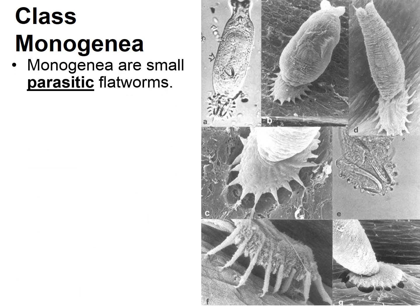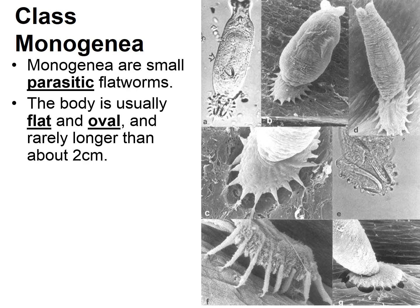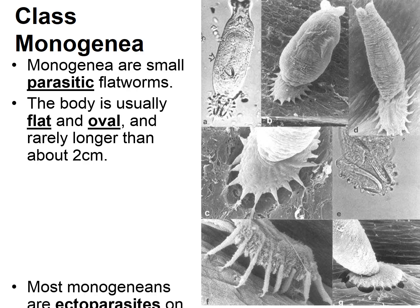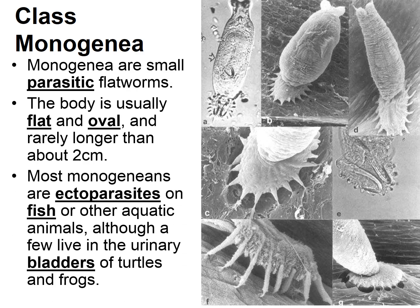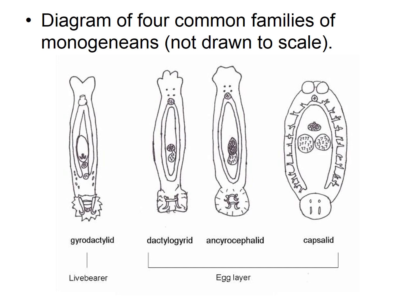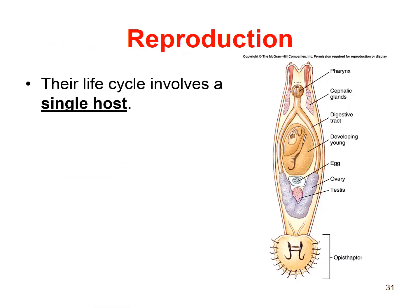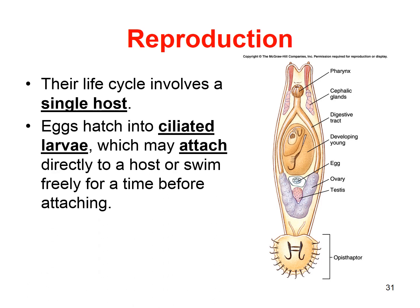Monogeneans are small parasitic flatworms. The body is usually flat and oval, usually just about two centimeters. Most monogeneans are ectoparasites — they live on the outside of fish and other aquatic animals, although a few live in the urinary bladders of turtles and frogs. Here is a diagram of four common families of monogeneans showing different body structures.